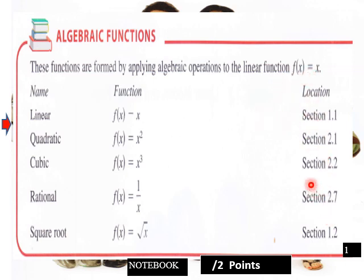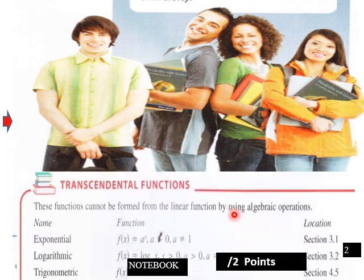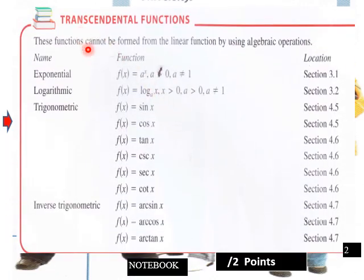So page one in your notebook here is an example here of a list of algebraic functions formed by applying algebraic operations to the linear function form f of x equals x. And then this gives you the sections that these types of functions are in: linear, quadratic, cubic, rational, root. And then transcendentals, these functions cannot be formed from the linear function by using algebraic operations. We go get into exponentials, logarithmic, and trigonometric here.